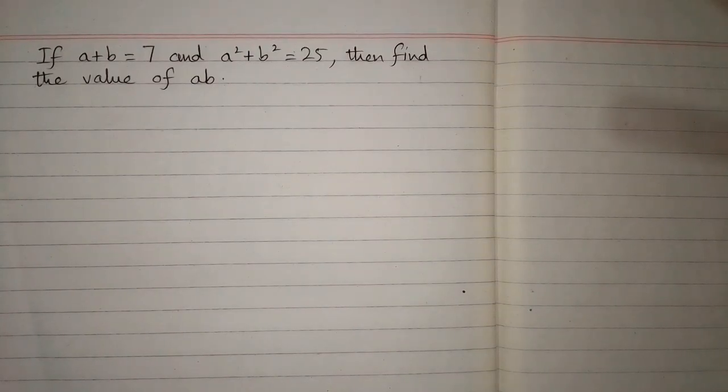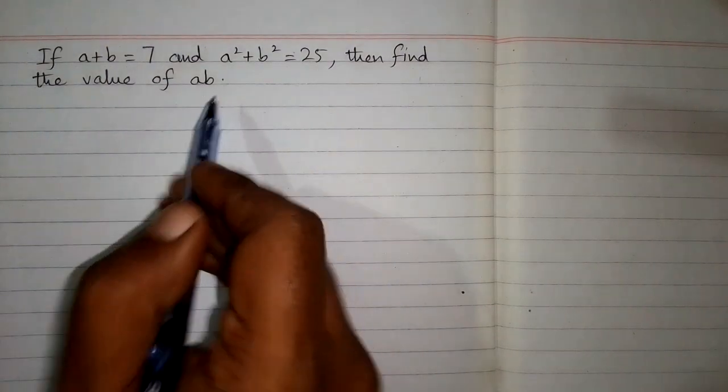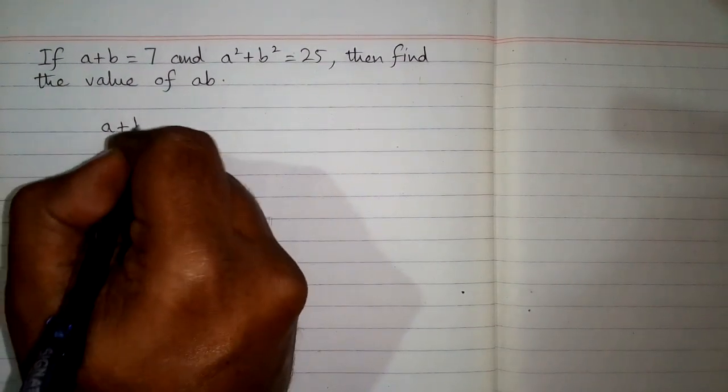If a+b is equal to 7 and a² + b² is equal to 25, then find the value of ab. In order to solve this problem, we will use an algebraic identity which is (a+b)²